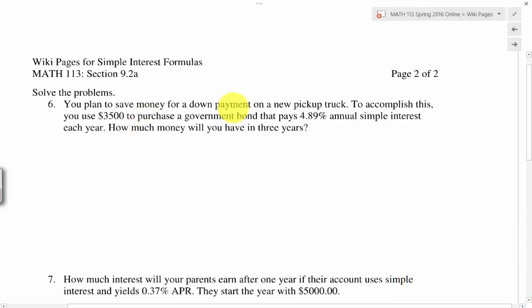You plan to save money for a down payment on a new pickup truck. To accomplish this, you use $3,500 to purchase a government bond that pays 4.89% annual simple interest each year. How much money will you have in three years? So I see a lot of information in this problem.